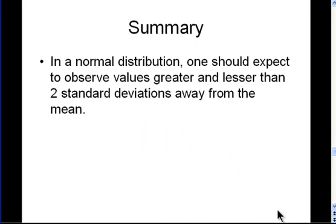In summary, in a normal distribution, one should expect to observe values greater and lesser than two standard deviations away from the mean. It's totally expected and totally normal.